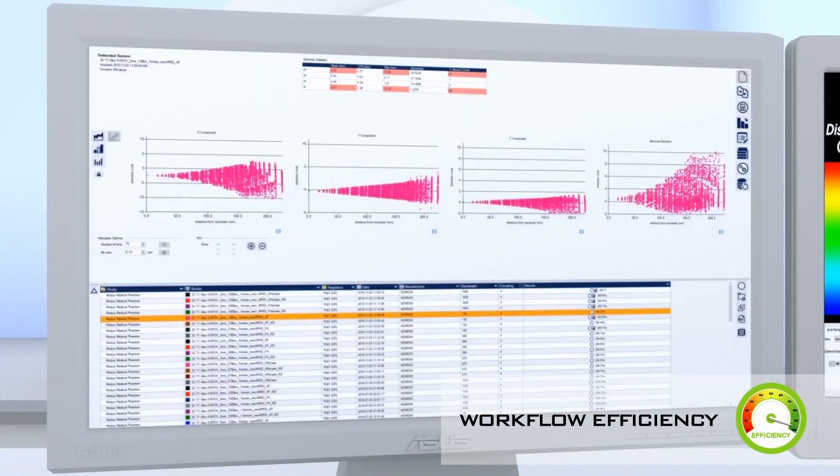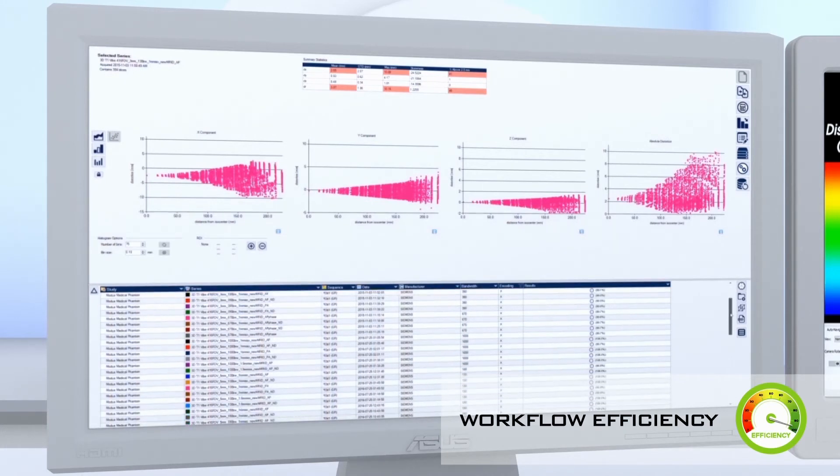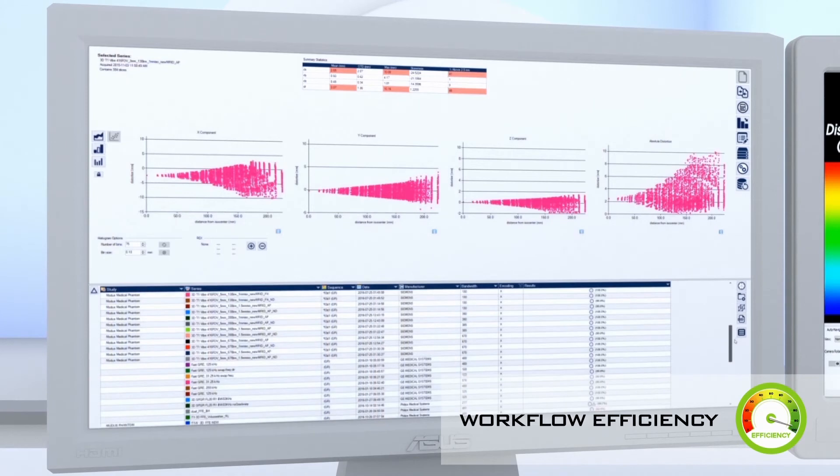To improve workflow efficiency, automated processes are used to identify location of control points, quantify geometric distortions, calculate distortion vector fields, and produce statistical analysis.